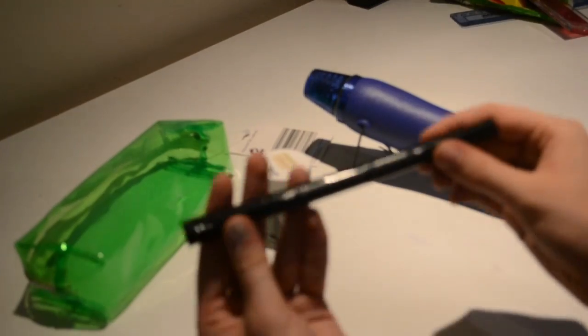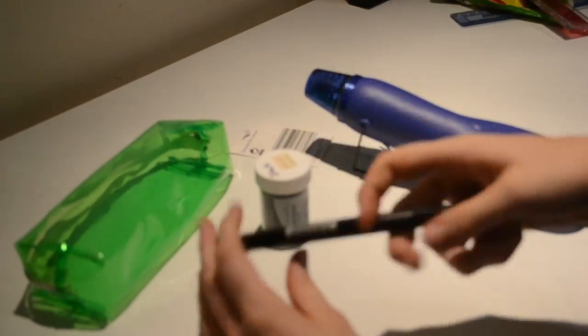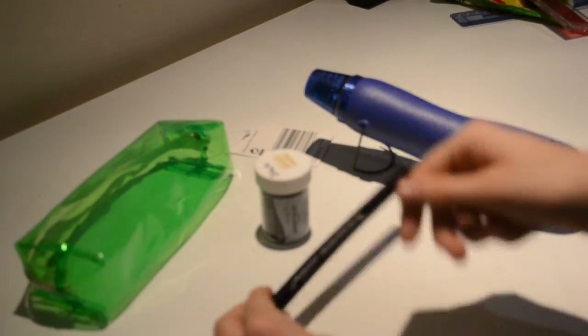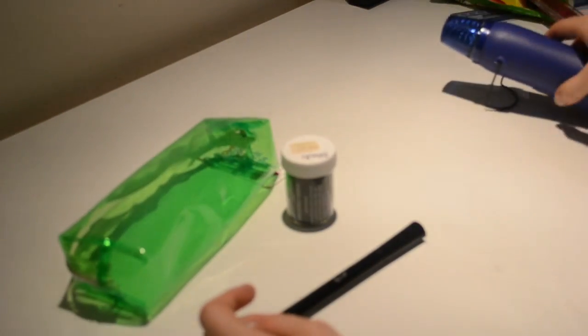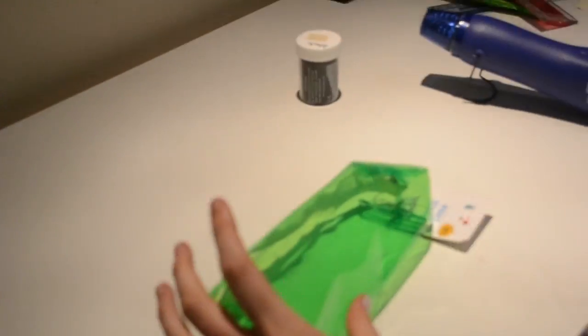So I want to start by apologizing for the awful video quality at the beginning. I didn't realize my camera wasn't properly focused. But anyway, what you will need is a double-ended embossing pen, black embossing powder, a transparent pencil case, and an embossing heat gun.